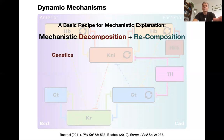We've seen that we can do the decomposition using genetics: empirical approaches that follow the interventionist causal approach that James Woodward is proposing. So you intervene on the organism by knocking out a gene, mutating it, over-expressing it, or any kind of perturbation, and then you check what the effect is.